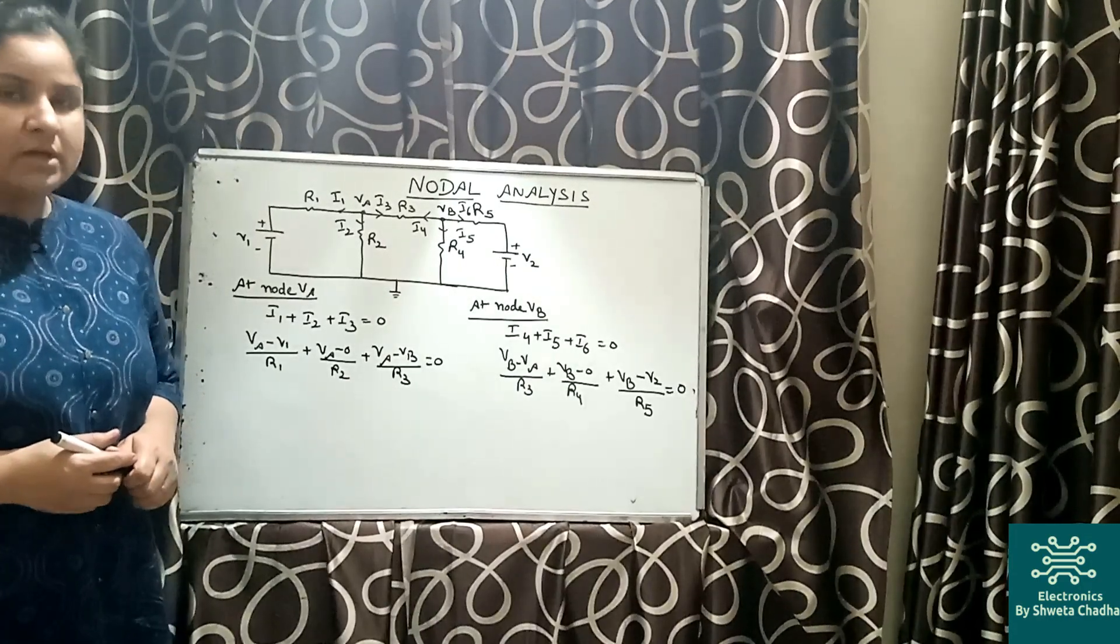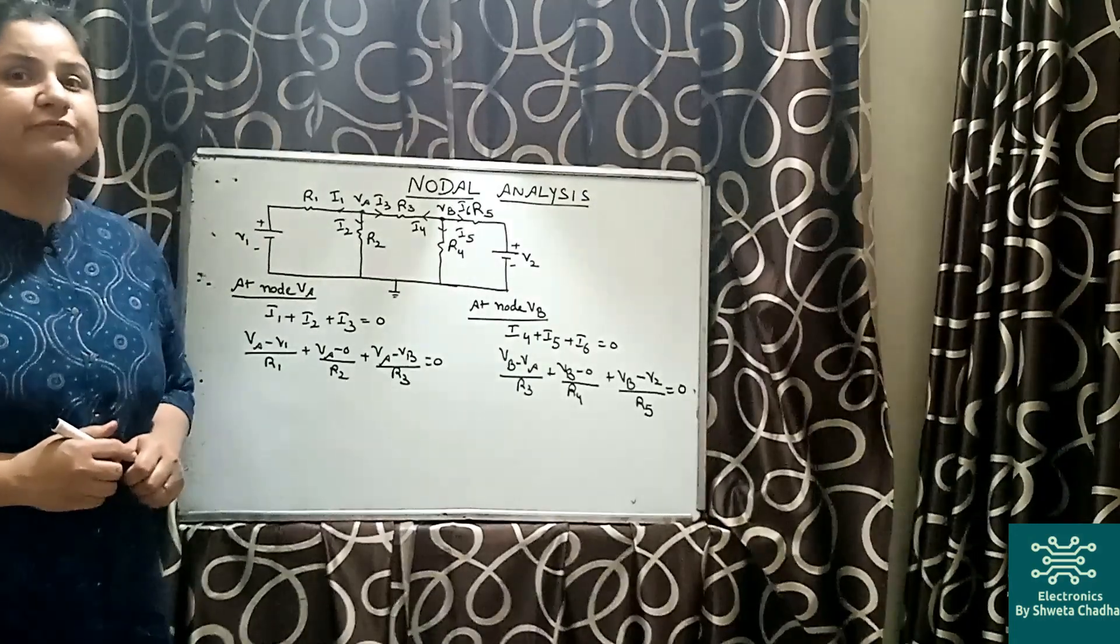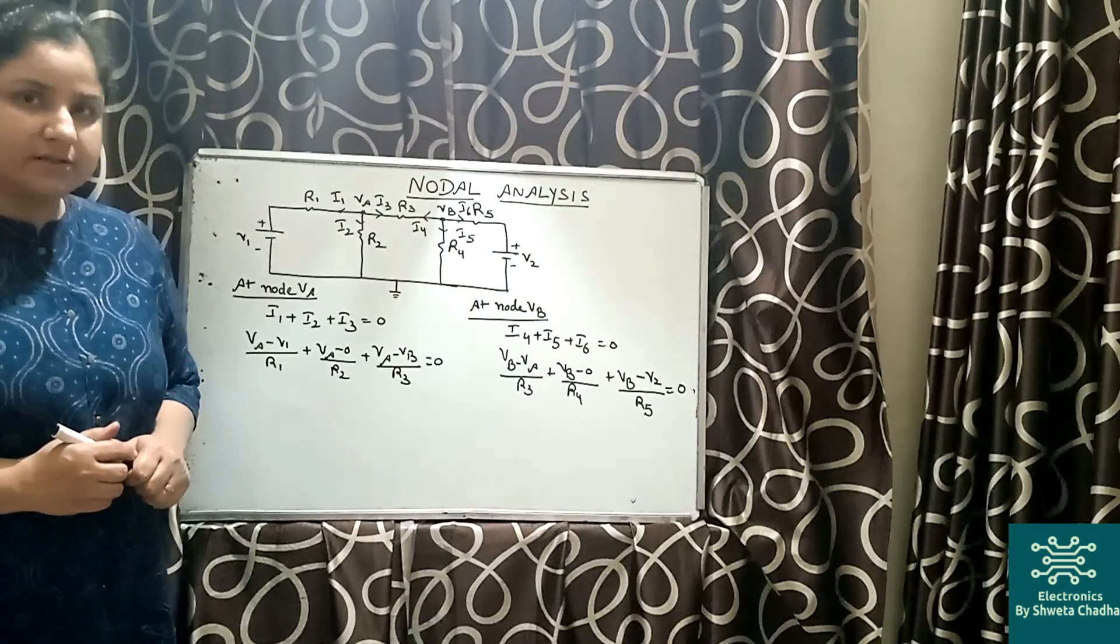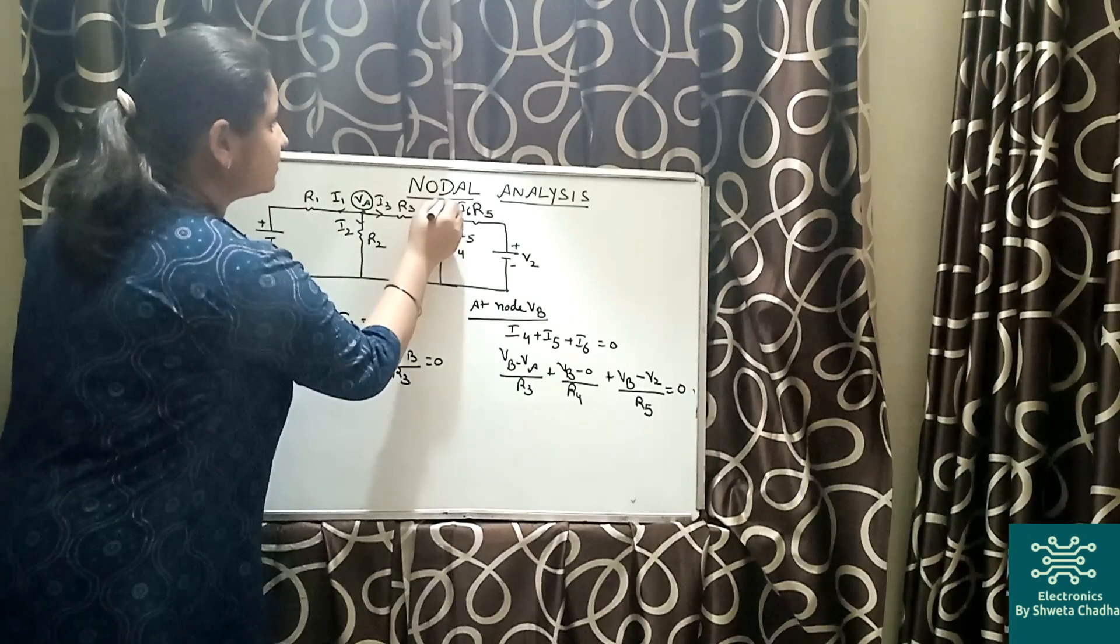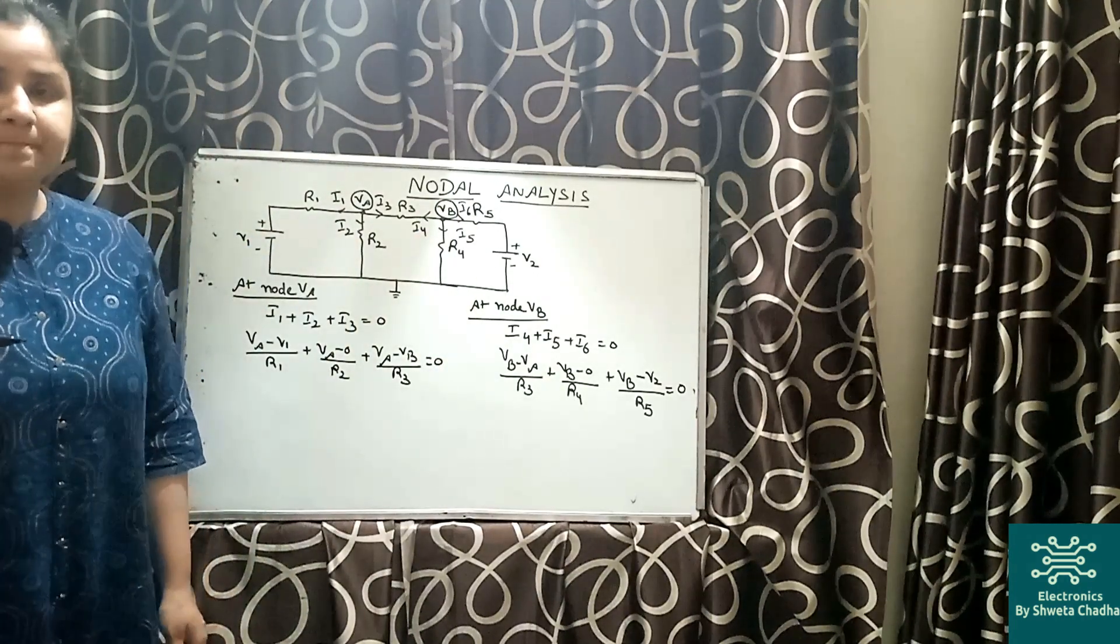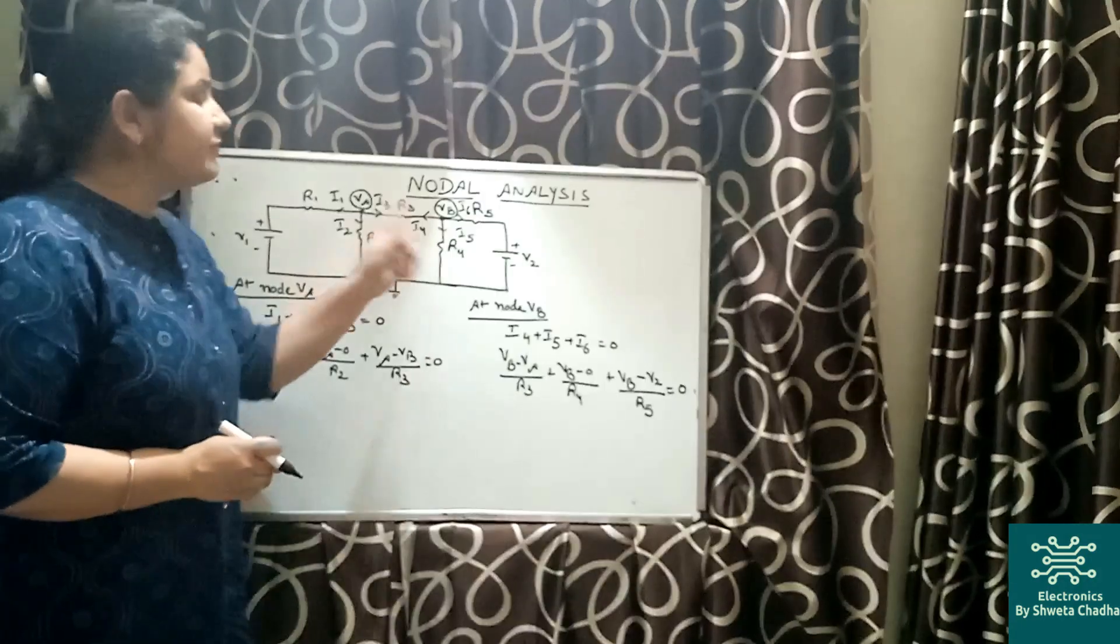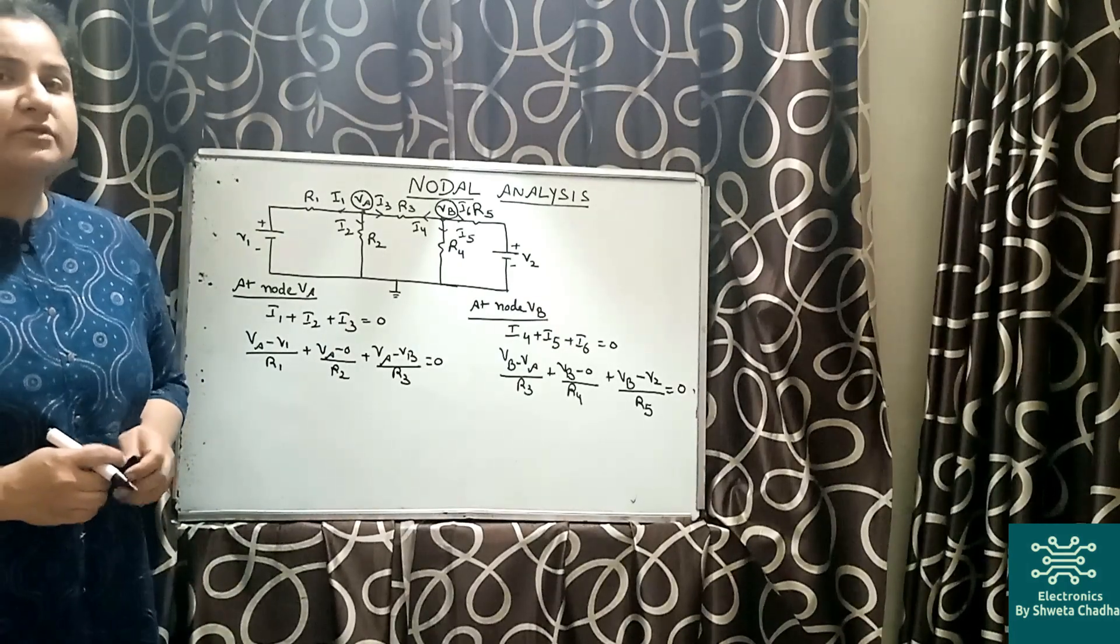The first thing we're going to do over here is assume the voltage at junctions or nodes. Let us consider these two junctions. Let us assume the voltage VA and VB at these two junctions, and then we are going to apply KCL at both the junctions.